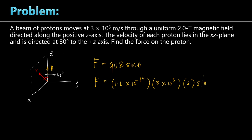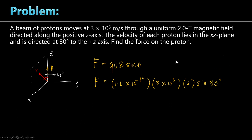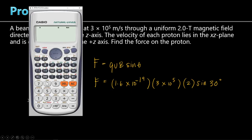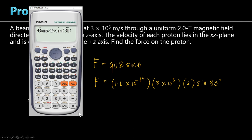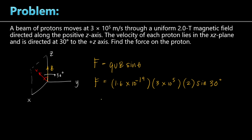Then we multiply by sine of theta. Theta is the angle between the velocity vector and the magnetic field vector, which is 30 degrees. So we compute: charge of electron using constant 23 in the calculator, times velocity 3 times 10 to the 5, times 2, times sine of 30 degrees. Make sure your calculator is in degree mode. The result is 4.8 times 10 to the negative 14. So the magnitude of the force is 4.8 times 10 to the negative 14 Newtons — a very small force.